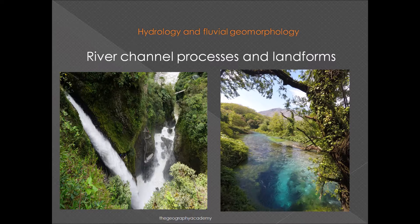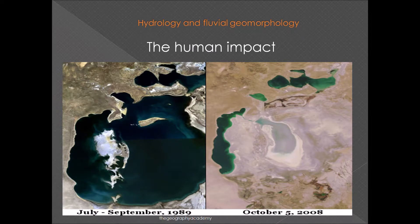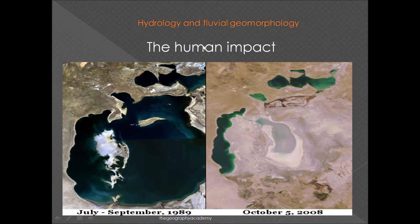You then look at river channel processes and landforms. You'll be familiar with a lot of these things — waterfalls, meanders, and other geological features — just with a few more extra features and a little bit more detail. For the human impact section, you'll look at flooding, what causes it, how we can prevent it, and you'll need case studies for that. You'll also look at how human beings have impacted the drainage basin, with case studies such as the Aral Sea, showing how water has been depleted from 1989 to 2008.